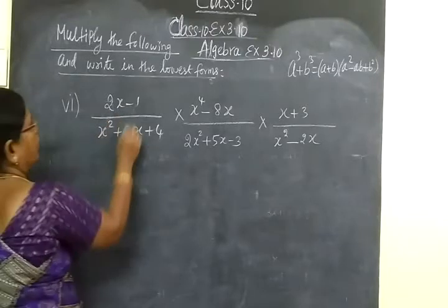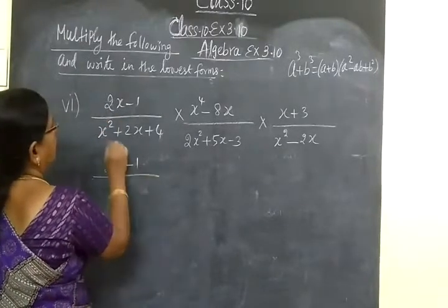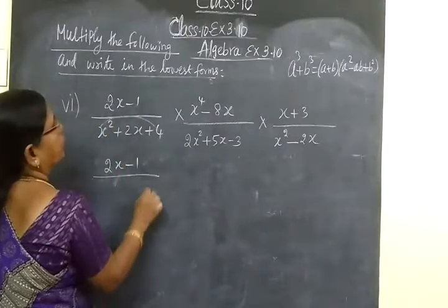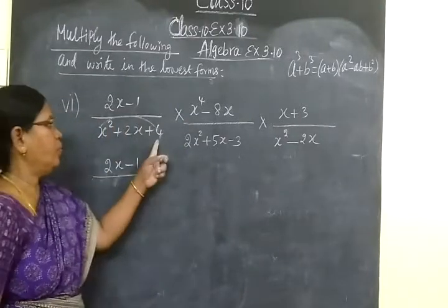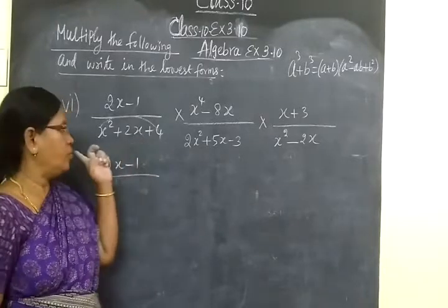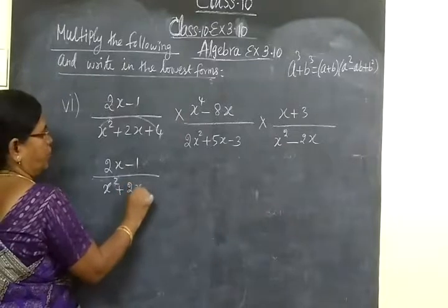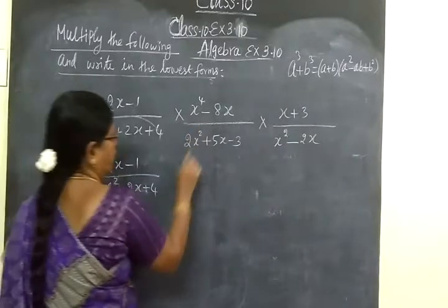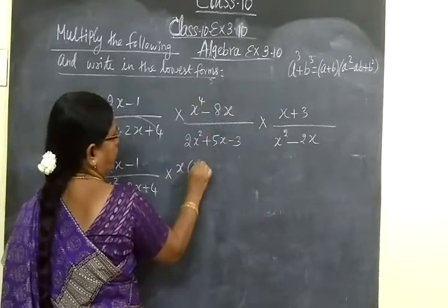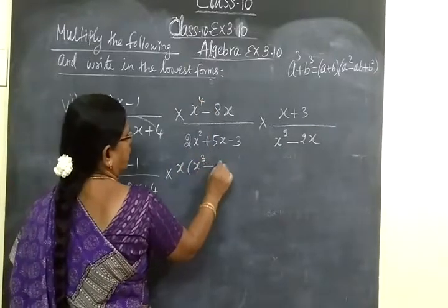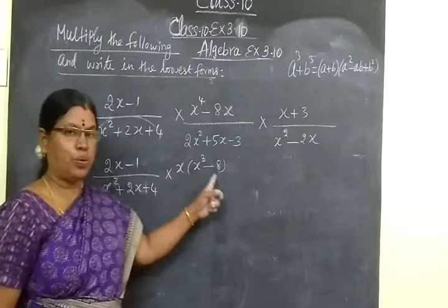Now this is the last one. We are writing 2x-1. When you multiply 4 and add 2, no chance. Now we are going to write x³-8. X is taken outside, so x³ minus 8.